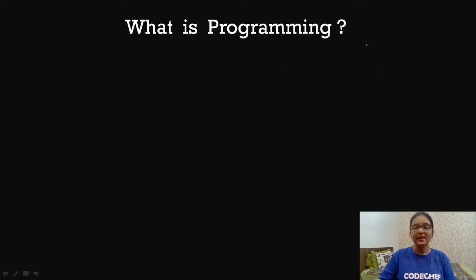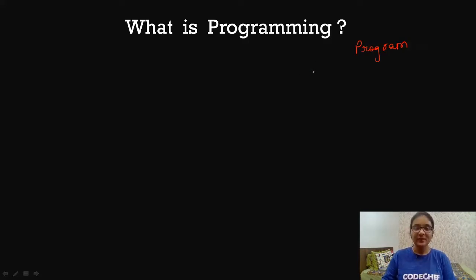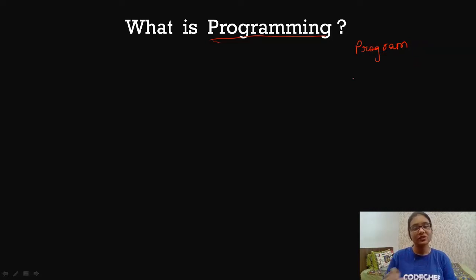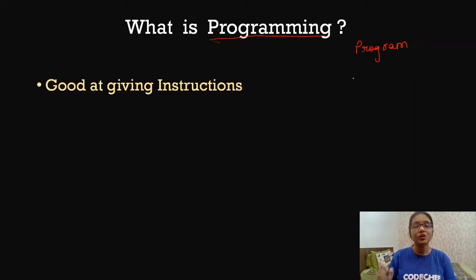Basically, there is a program that is written in order to make something happen, in order to execute some instructions. A person who writes a program is known as a programmer, and this entire process of writing a program is known as programming. Programming is all about giving instructions — we give a few lines of instructions, those instructions are executed, and our task is done. So to be a good programmer, you need to be good at giving instructions.